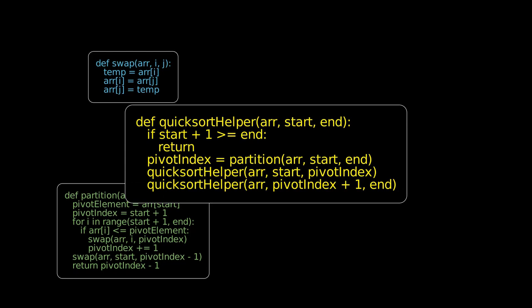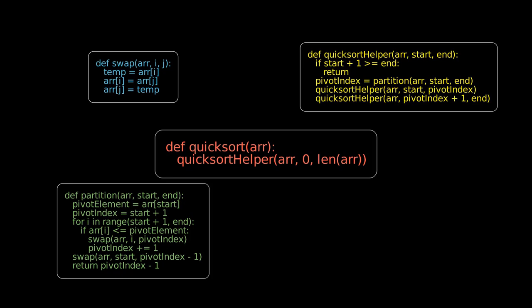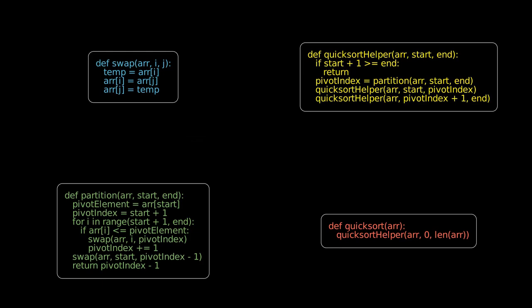Then, we'll have a helper function that actually runs the quicksort routine. It partitions the array and then recursively calls itself on the subsections of the array as divided by the pivot index. Finally, the main quicksort function is just a wrapper around our helper. It calls the helper with the initial window of 0 and the length of the list. Again, to get more into the details, you can take a look at the exact code on GitHub, but hopefully, it's clear already that this is a bit more complicated than our original version.